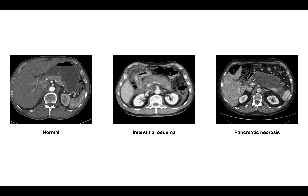Pancreatic necrosis appears as black pancreatic tissue with decreased or absent enhancement with IV contrast. So to summarize: a normal pancreas, a swollen pancreas with interstitial edema, and a non-enhancing pancreas indicating pancreatic necrosis.